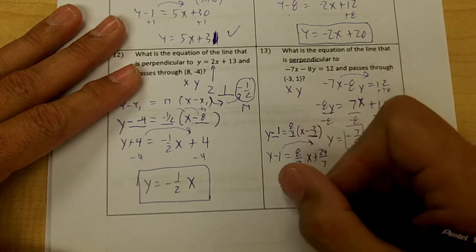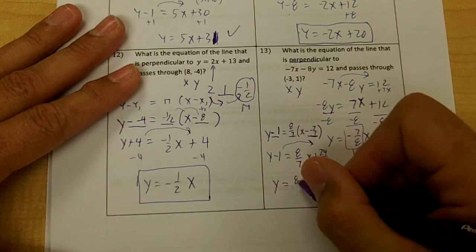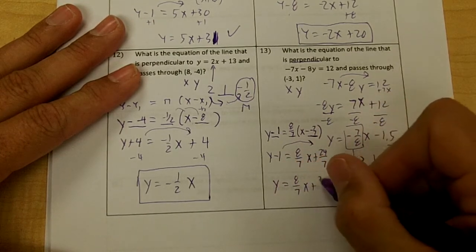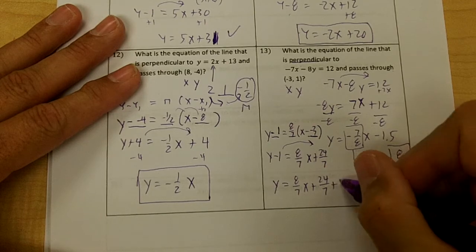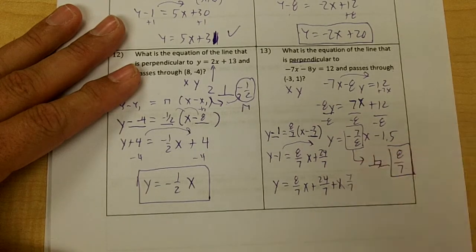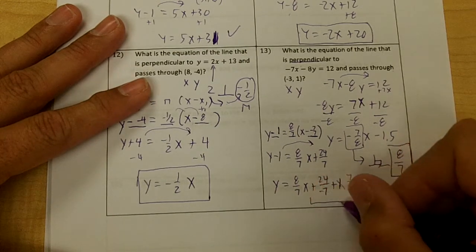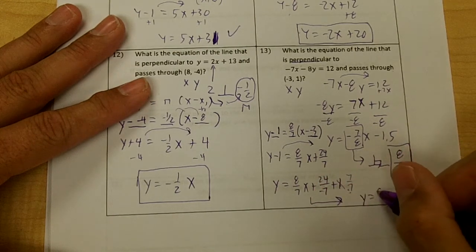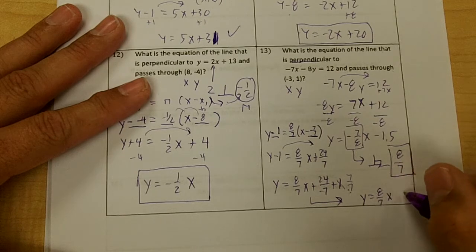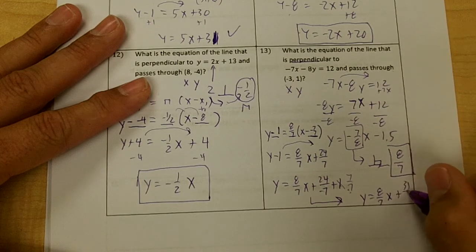Then I'm going to move the 1 across: y equals 8 over 7x plus 24 over 7 plus 1. That 1 is going to turn into 7 over 7, isn't it, to get a common denominator? So the final answer will be y equals 8 over 7x plus 31 over 7.